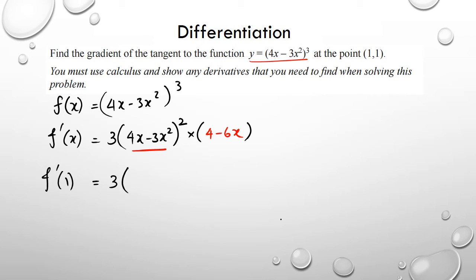So to find the gradient, you're just looking for f'(1). So then this would be 3 brackets (4 times 1 minus 3 times 1 squared)². So I got (4 times 1 minus 3 times 1 squared)² multiplied by (4 - 6 times 1).